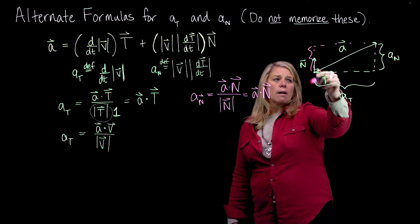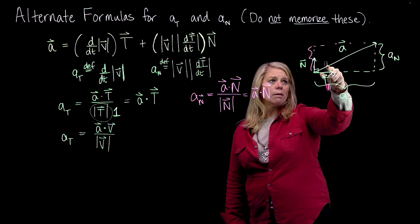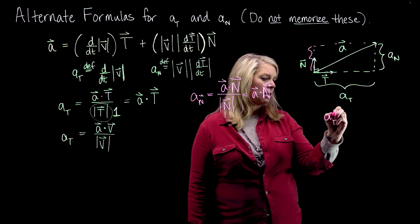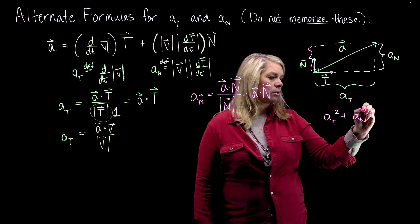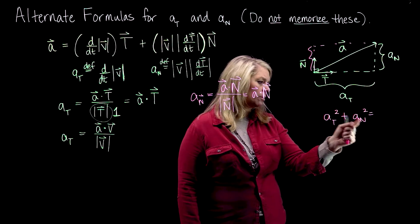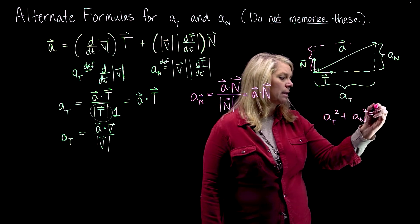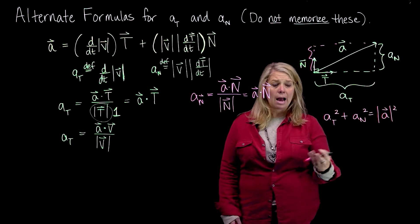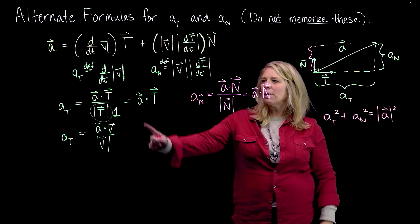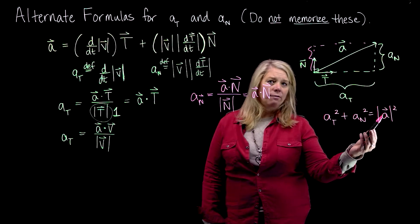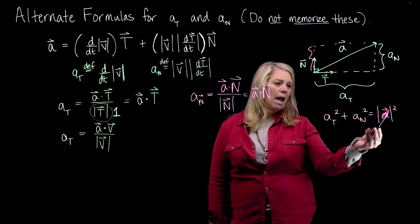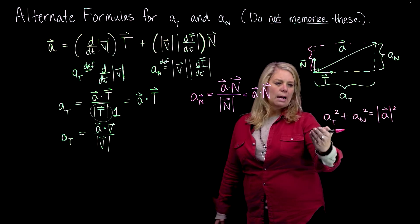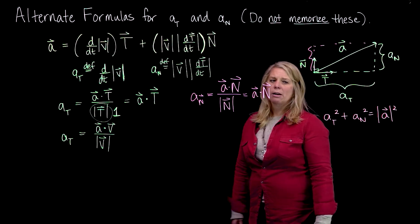Another thing you might notice is that we have a right triangle, so the Pythagorean theorem gives a relationship between the sides: A sub T squared plus A sub N squared equals the magnitude of A squared. I don't need magnitudes on AT and AN because these are scalars. I use this one a lot to calculate A sub N — A sub T is often pretty straightforward to calculate, A is easy to calculate, so sometimes I use Pythagorean theorem to find A sub N. On your formula sheet for this unit, this formula is solved for A sub N.